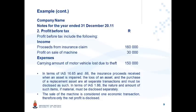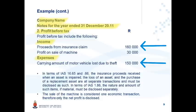The company uses a profit before tax note. When you do disclosure, always put a proper name of the company, a heading, and notes for the year ended with a proper year-end date. Name of the note: Profit before tax. Profit before tax includes the following — there is always an income section and an expenses section. For the stolen vehicle, you show the carrying amount of the vehicle lost due to theft as one economic event, and the proceeds from the insurance claim of 160,000 as another separate economic event. These are two separate economic events; you are not allowed to show a net amount of R10,000 — you show them separately.